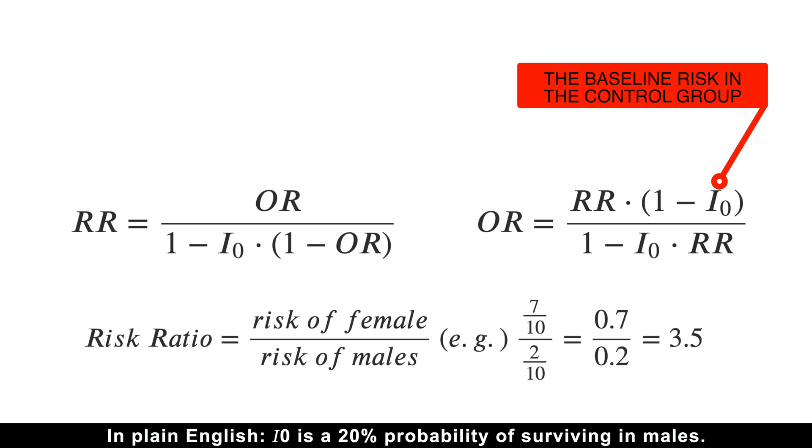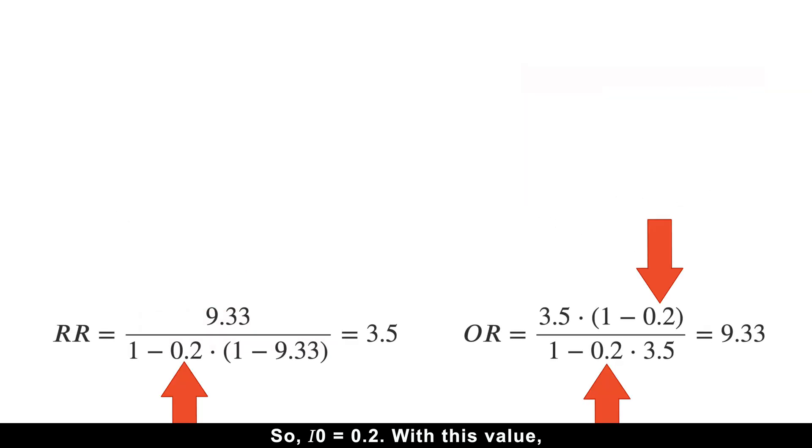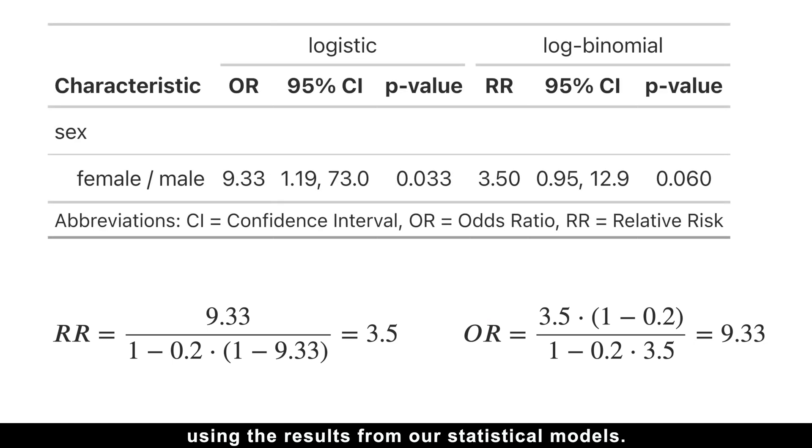In plain English, i0 is a 20% probability of surviving in males. So, i0 is equal to 0.2. With this value, we can easily convert between risk ratios and odds ratios using the results from our statistical models.